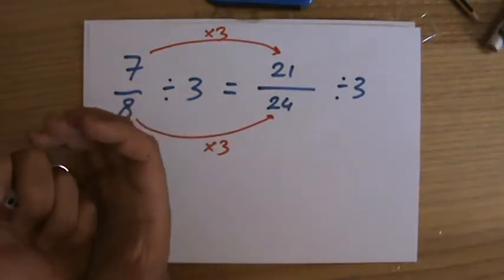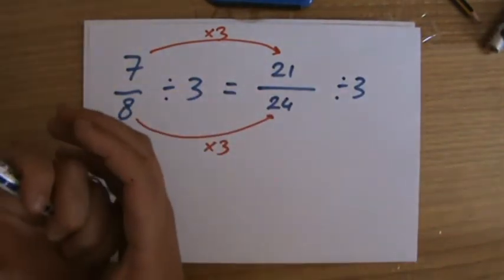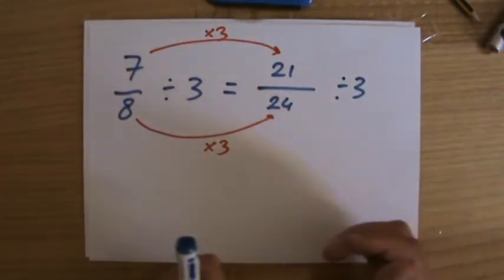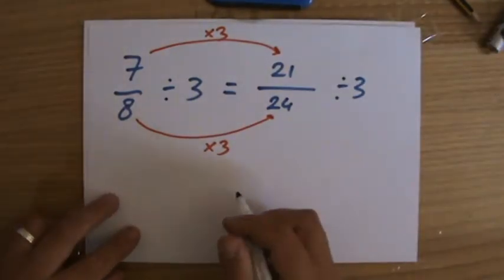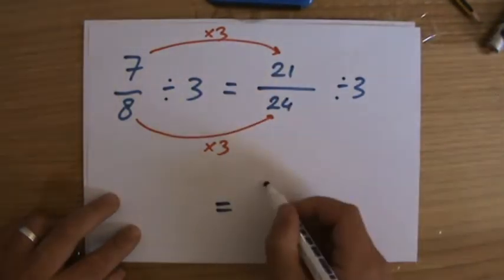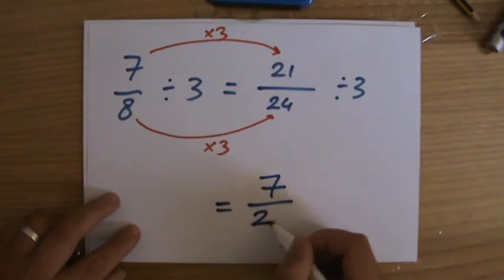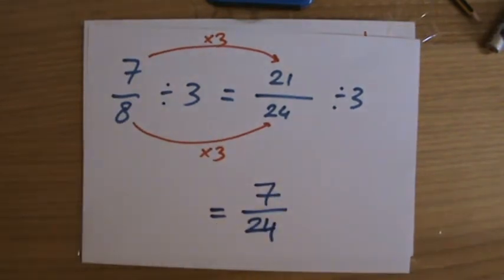Still got to divide it by 3. So, I have 21 of those little piles, 21 over 24 little piles. Do you understand what I'm trying to say? So, how much does everybody get? Well, everybody's going to get 7 of those divided by 3. So, 7 over 24.